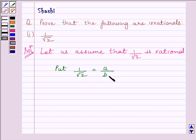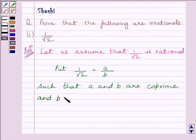Such that A and B are coprime and B is not equal to 0. Now, 1 upon root 2 equal to A upon B implies root 2 is equal to B upon A.